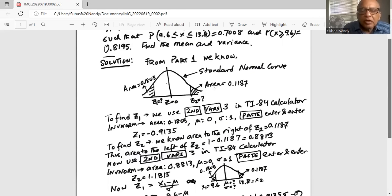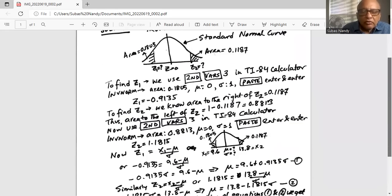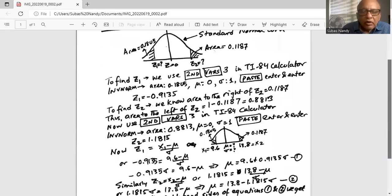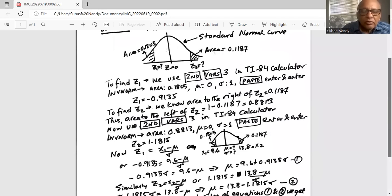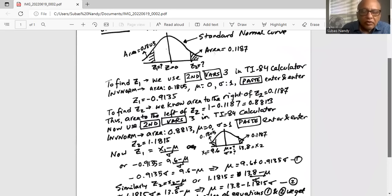This is a standard normal variable corresponding to 13.8. Now we write the equation for z1 and we know z1 is minus 0.9135 and it corresponds to the random variable 9.6 minus mu divided by sigma. We do use the definition of the standard normal variable. Now if we simplify this equation we will get an equation for mu as 9.6 plus 0.9135 sigma.